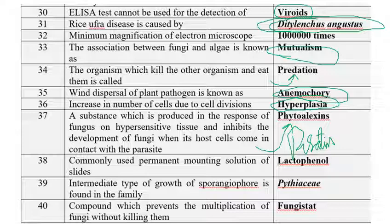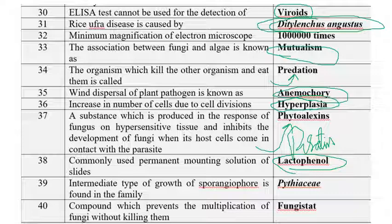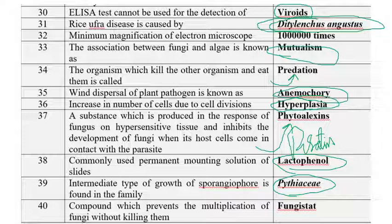The most commonly used permanent mounting solution for slides in a laboratory is lactophenol. Intermediate type of growth of sporangiospores is found in the family Pytaceae. A compound which prevents the multiplication of fungi without killing them is a fungistat. A fungicide kills the fungus, but a fungistat inhibits the growth and multiplication without killing it.